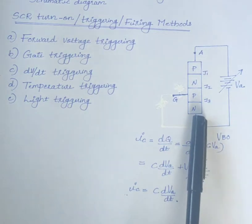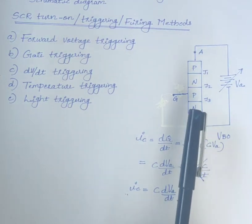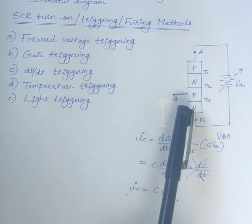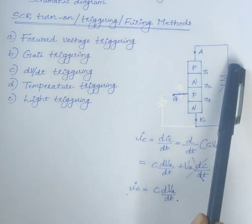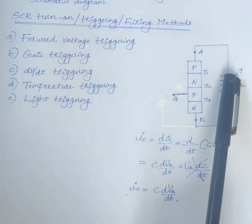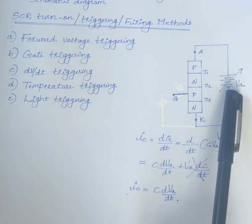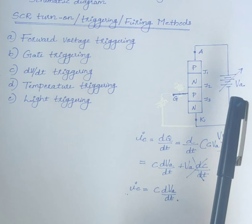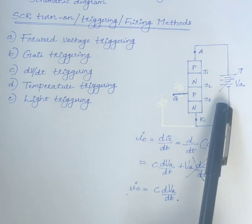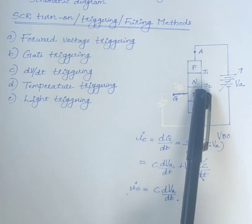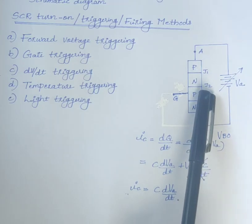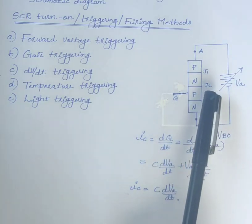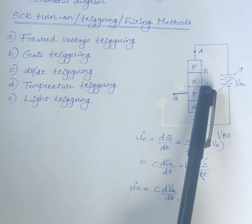Next one is temperature triggering. This is somewhat similar to that of forward voltage triggering. Here also, anode is connected to positive of the supply and cathode is connected to negative of the supply, and the SCR is forward biased. When the voltage is applied across the reverse biased junction J2, the leakage current flows through the junction J2. This increases the temperature of this junction.